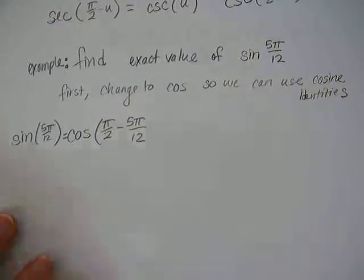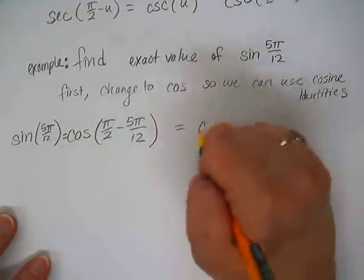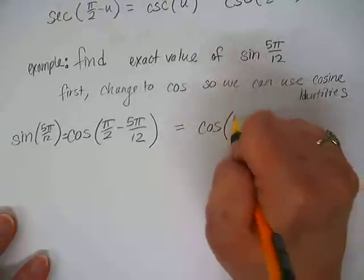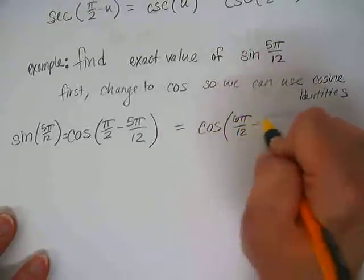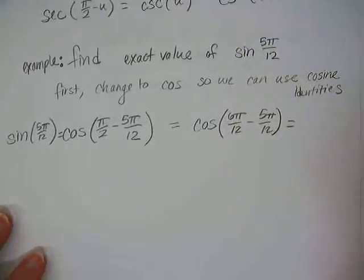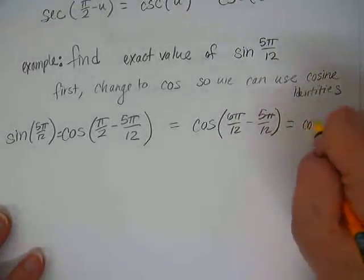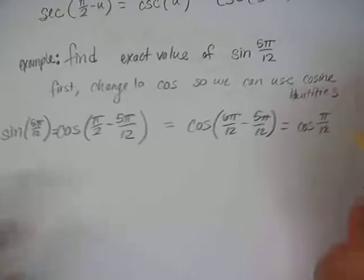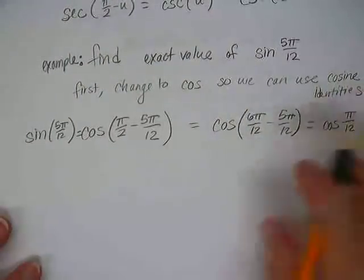So pi halves minus 5 pi 12th. So we need a common denominator to do that. 6 pi over 12. So cosine 6 pi over 12 minus 5 pi over 12. Which is the cosine of pi over 12.